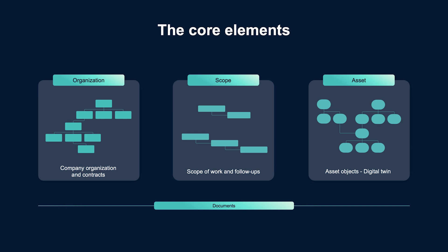Our core data structures are now the O Units, which represents the company organization's units such as departments, projects and contracts. The Scope Items, which is the scope of work and follow-up items, and it can also be used to define your own registers and processes — we'll come back to this later in this video. The Asset Structure, which is a digital twin of the product to be built, maintained or operated. And in addition, we have the Document Register.